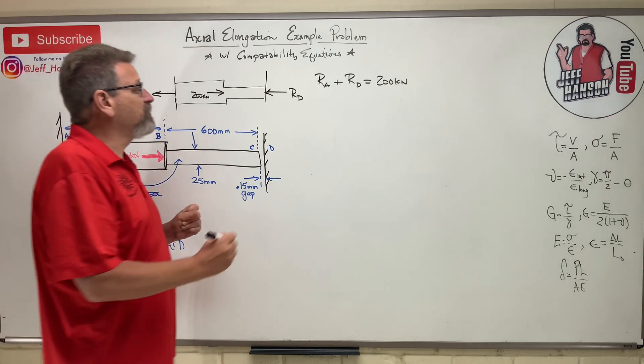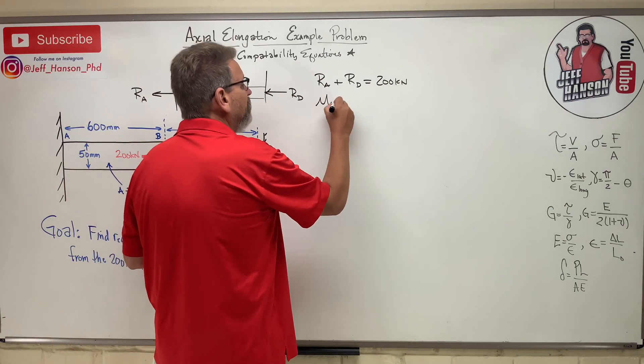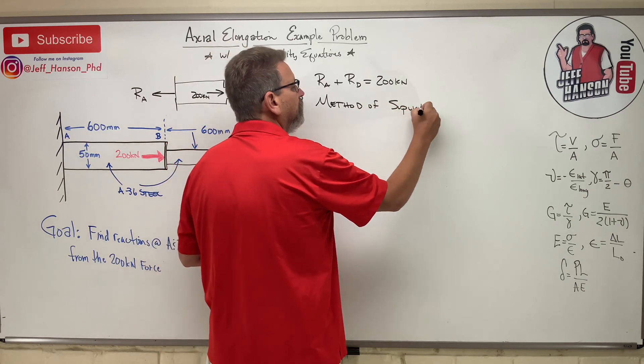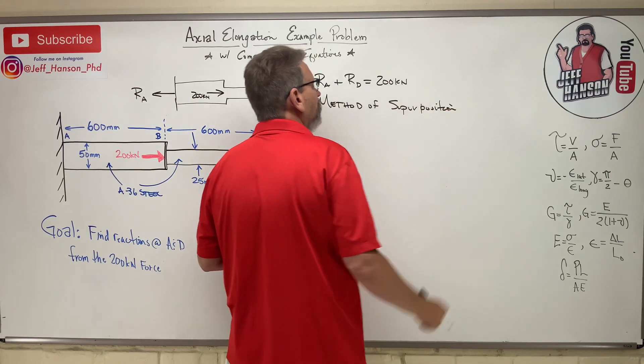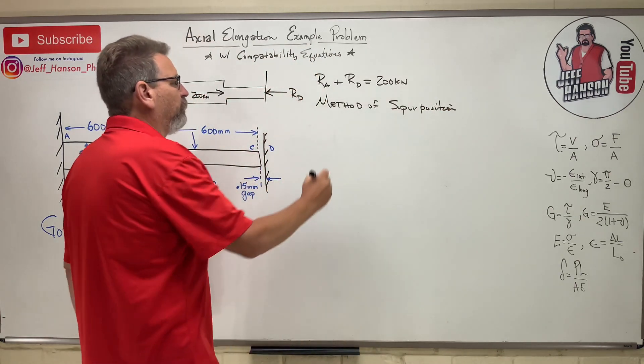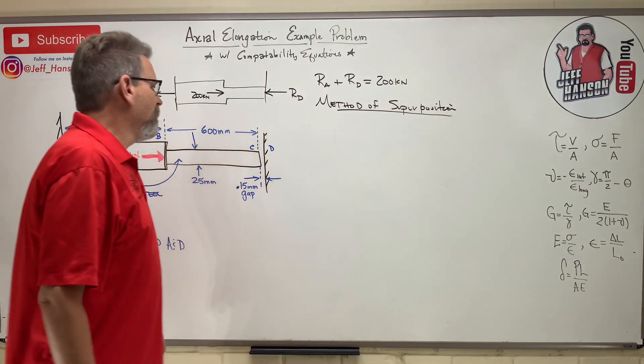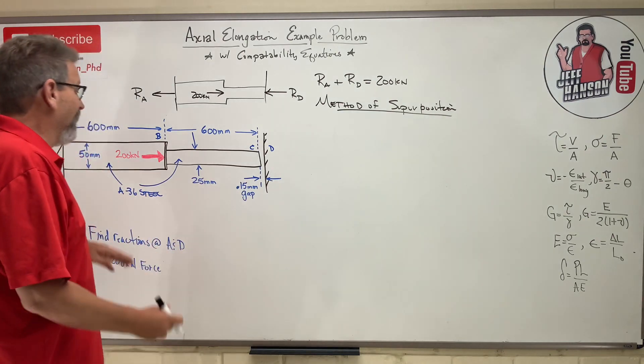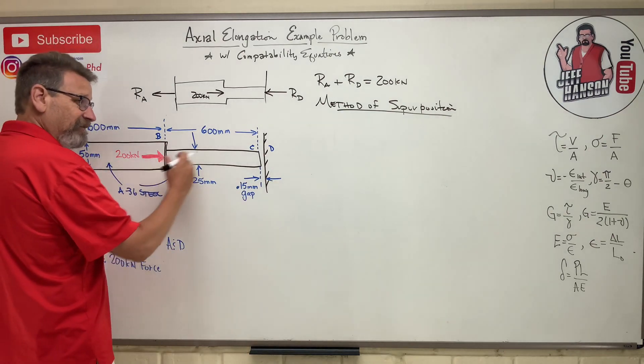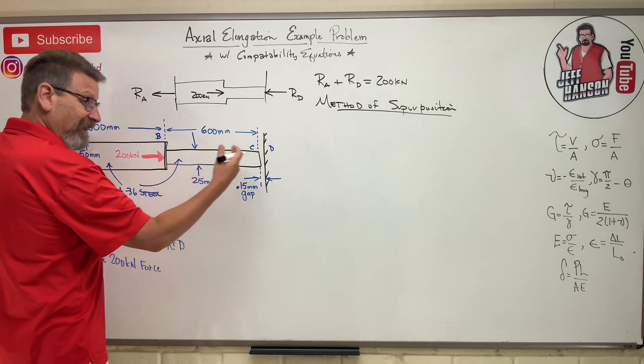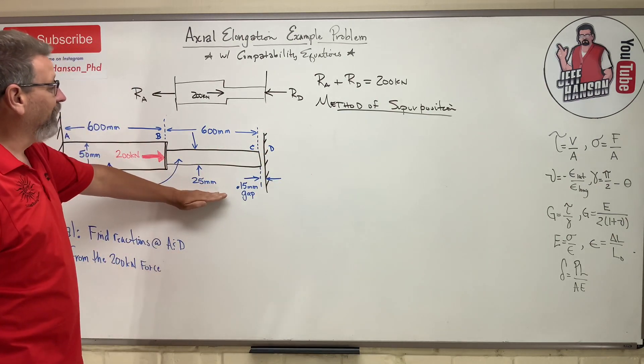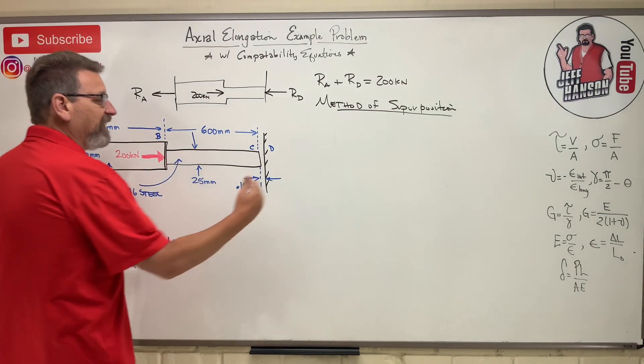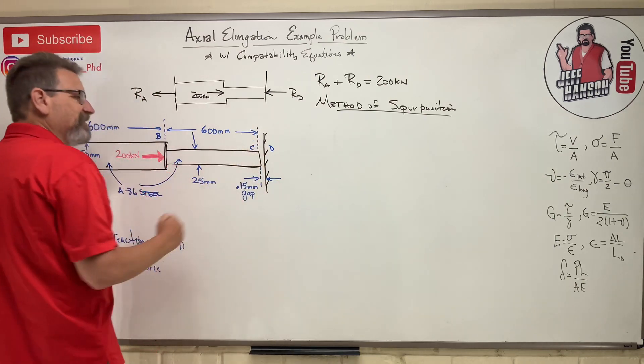So to solve this problem, we're going to use something called the method of superposition. The method of superposition. And this is pretty easy. So we're just going to take away this wall over here. Just pretend it's not there. And then we're going to let this guy expand. We're going to let it grow. We're going to let it grow without that wall there. And then we're going to take and put the wall back and it's going to compress it back to this amount here.